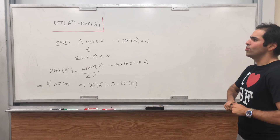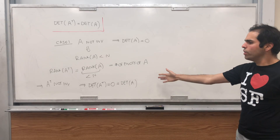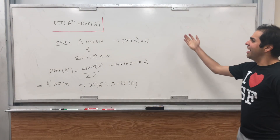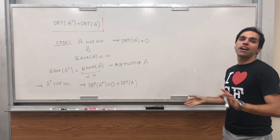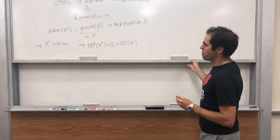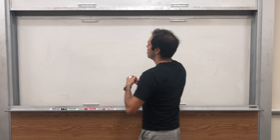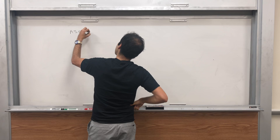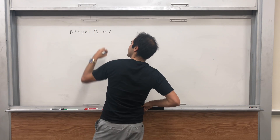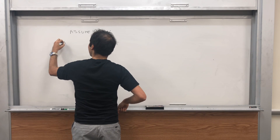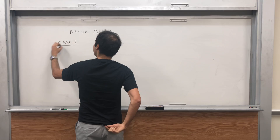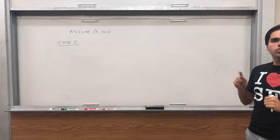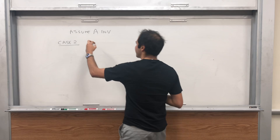So in the case where A is not invertible, we know that this identity holds. From now on, assume that A is invertible. For the second case, let's do the simplest case possible.